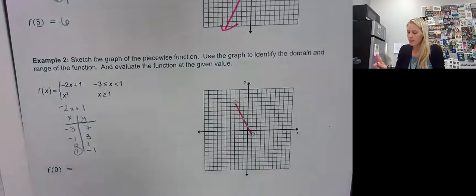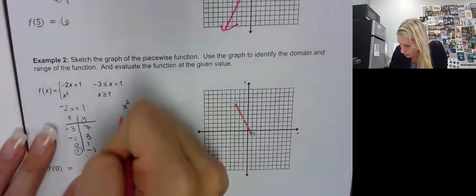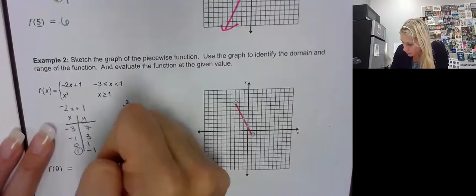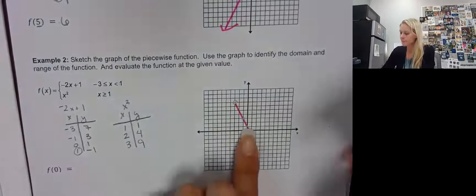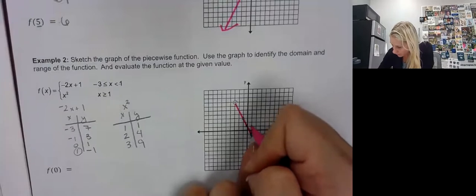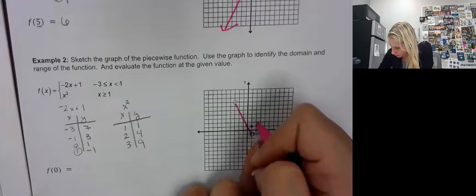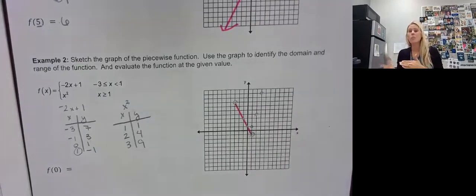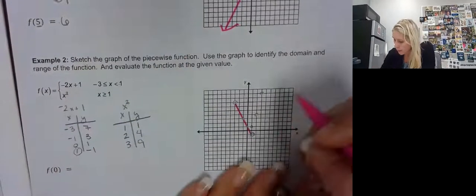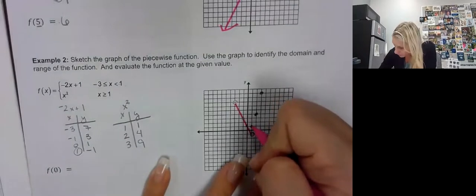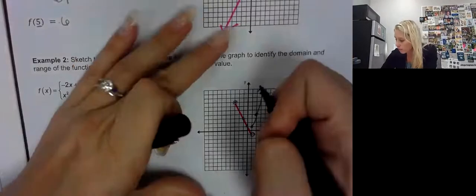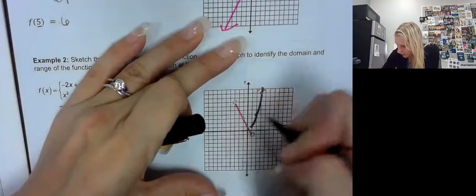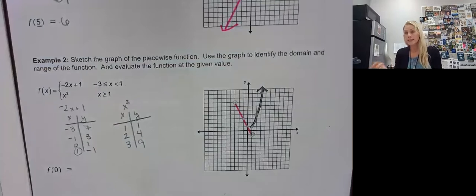Now let's do that quadratic. The quadratic here is for x greater than 1, so I need to start at 1 — that's going to be filled in. So maybe I'll do 2 and 3. One squared is 1, 2 squared is 4, 3 squared is 9. At 1 we have 1, and it's filled in. At 2 we're at 4, at 3 we're at 9. What's funny is it almost looks linear, but it's not, so I can't use my ruler. I start at the 1 filled in, and curve it with my arrow.